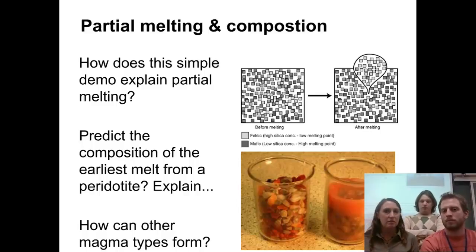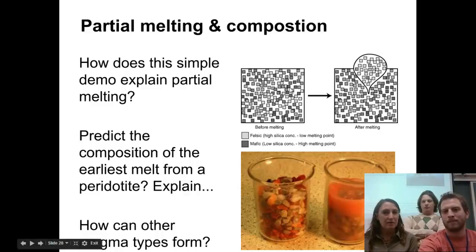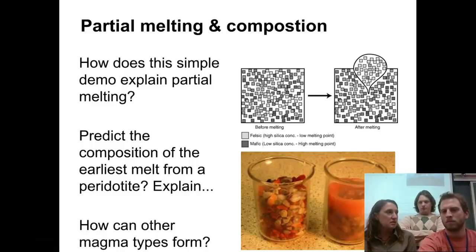It sounds like part of what we've been talking about for a couple weeks now with Bowen's reaction series. The diagram in the top actually shows us on the left side before melting if you look at the different colors of squares. The lighter color squares are like felsic minerals. And the darker color squares are more like the ferro-magnesium or the mafic minerals. And as you start to increase the temperature, the first thing that's going to melt are the lower temperature felsic minerals.